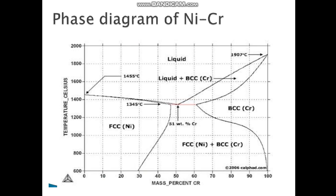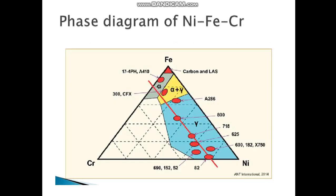In the nickel-chromium diagram, you will see that at around 1345 degrees Celsius the highest solubility of chromium in nickel is 51 weight percent. This makes the nickel-based alloy corrosion resistant because when chromium is alloyed with nickel it forms a Cr2O3 protective passive film on the material surface, making them corrosion resistant.